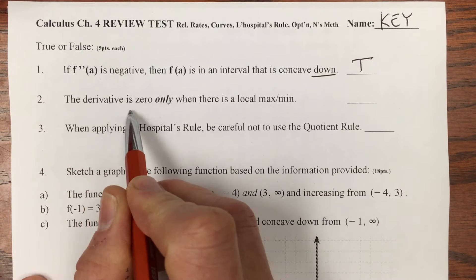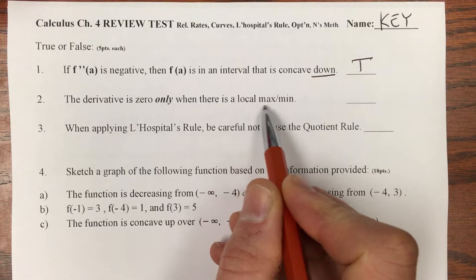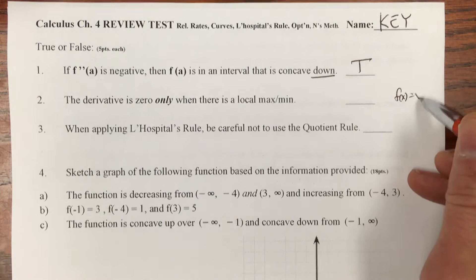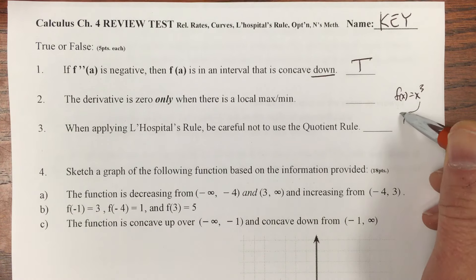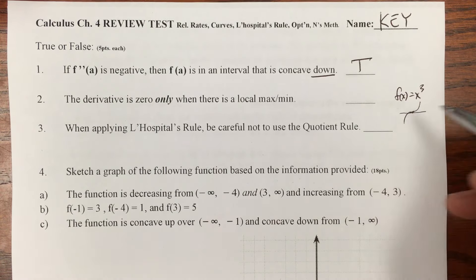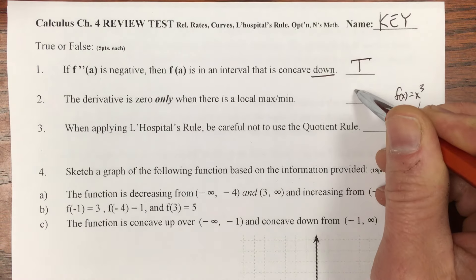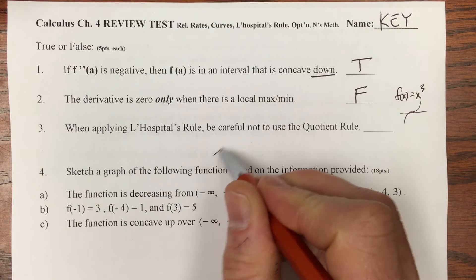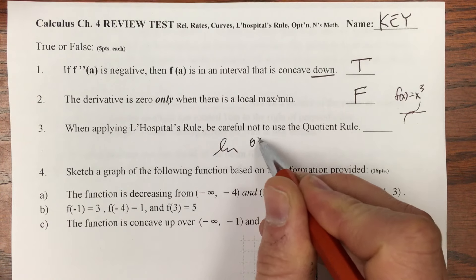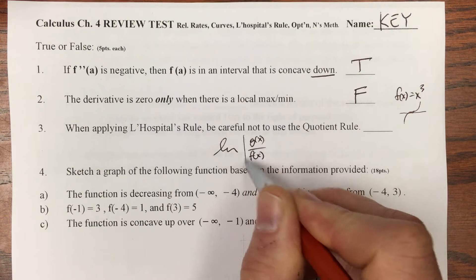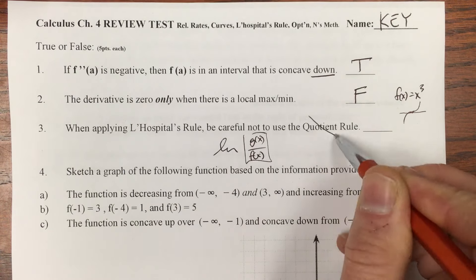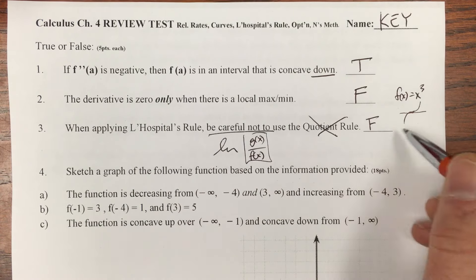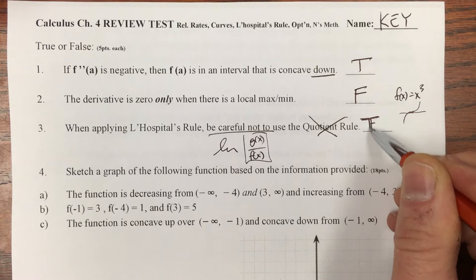The derivative is zero only when there is a local max or min. Well, if you have a function like f(x) = x³, you can get a zero for your derivative, but that is neither a max nor a min, so that is false. When applying L'Hopital's rule, we've got the limit of g(x) over f(x). Yes, it's a quotient, but we do not use the quotient rule. That is false. Be careful not to. This is true.